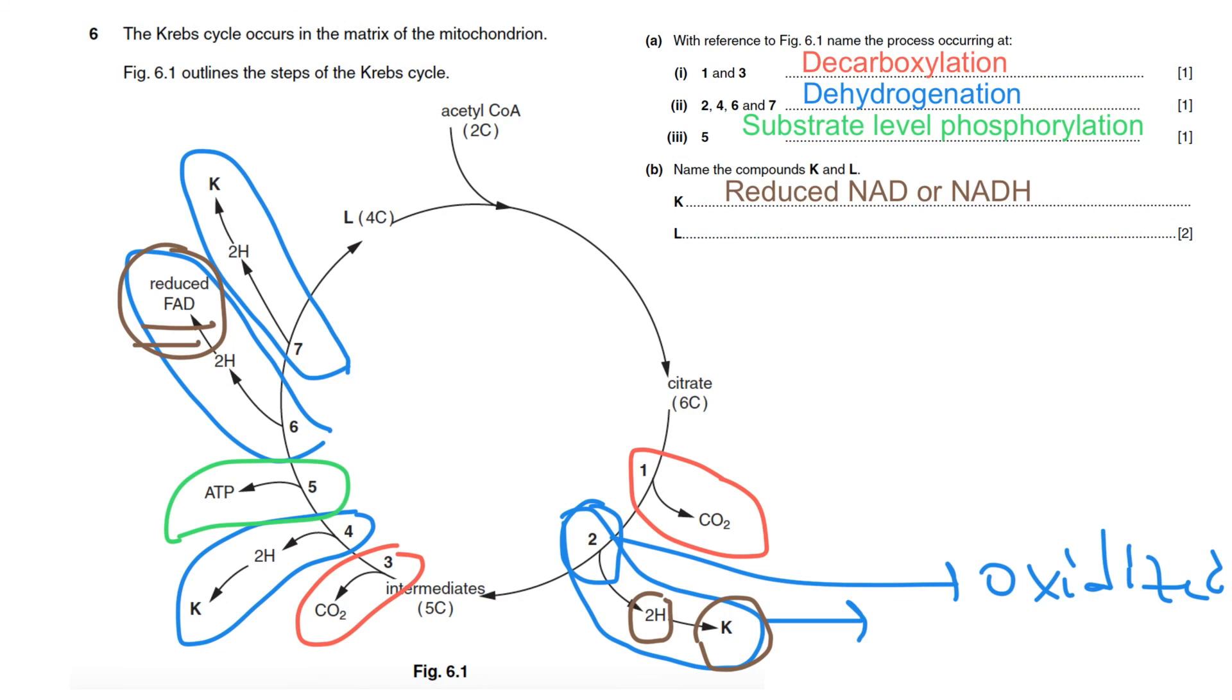Okay, what about compound L? It is here. L is here. L is the last compound in the citric acid cycle. So the oxaloacetate is regenerated.